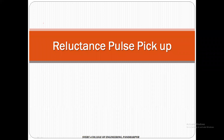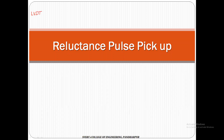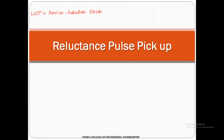Let me summarize the points we discussed in the previous session. We discussed the first type of transducer, which is nothing but the linear variable differential transformer. This LVDT is called a passive inductive electrical transducer.